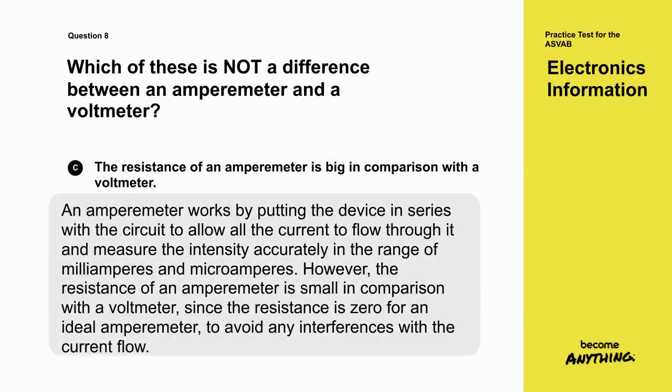An amperometer works by putting the device in series with the circuit, to allow all the current to flow through it, and measure the intensity accurately, in the range of milliamperes and microamperes. However, the resistance of an amperometer is small in comparison with a voltmeter, since the resistance is zero for an ideal amperometer, to avoid any interferences with the current flow.